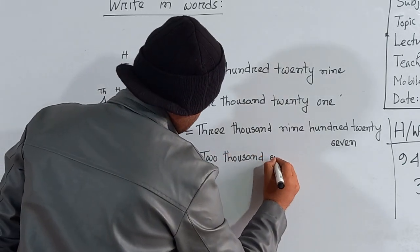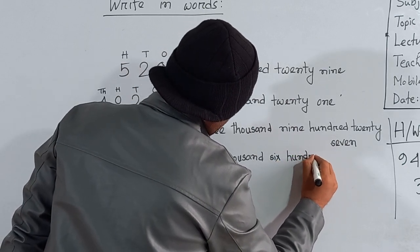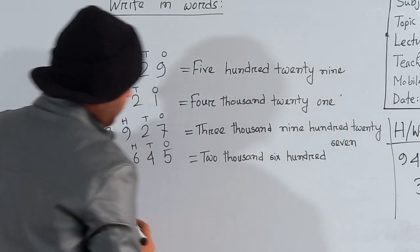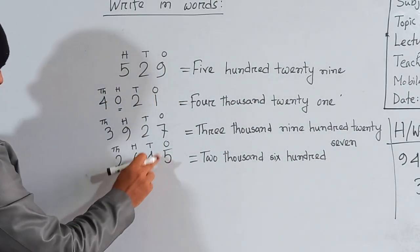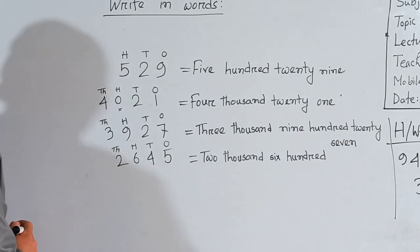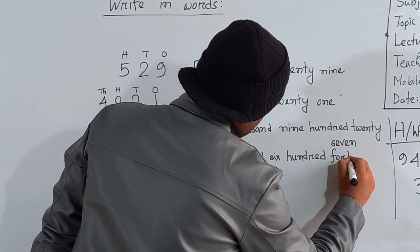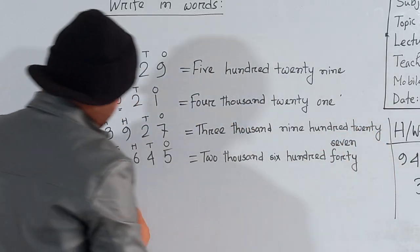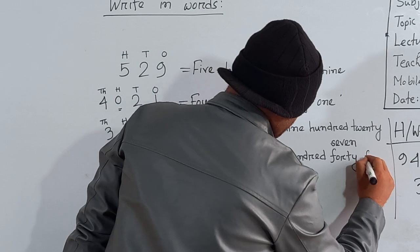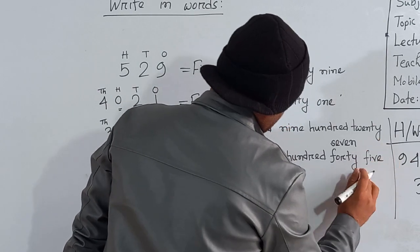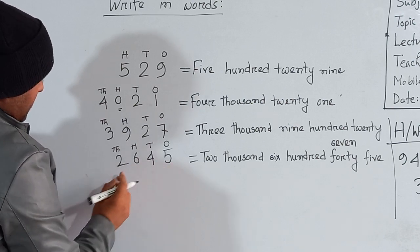So it will be S-I-X six hundred H-U-N-D-R-E-D — two thousand six hundred. How many tens are here? Four tens, that means forty — F-O-R-T-Y, forty. And how many ones are here? Five ones. So you can write here five — F-I-V-E. Two thousand six hundred forty five.